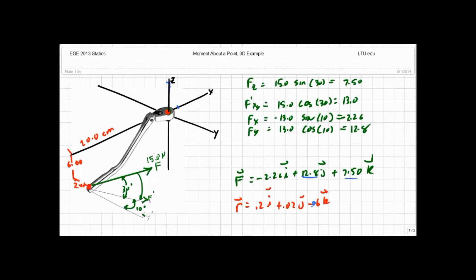So our net result is a vector, a moment vector that goes off somewhere in this direction, something like that. It's hard to draw.